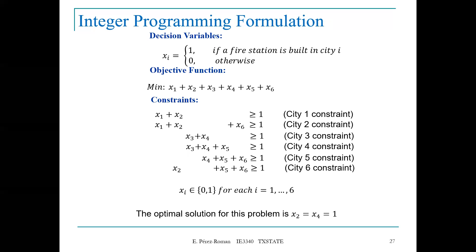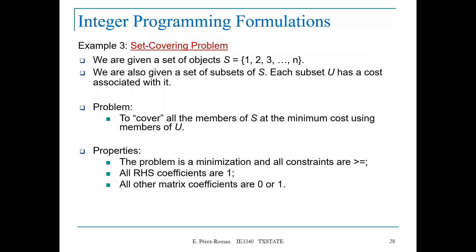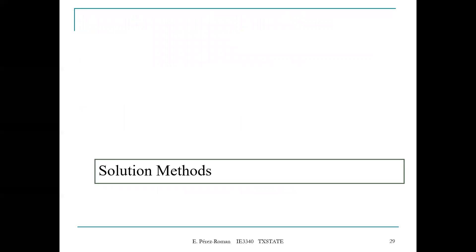This type of problem is called the set covering problem, where we are given a set of objects one through n, a set of subsets each with an associated cost, and the goal is to cover all members at minimum cost. Properties: the problem is a minimization, all constraints are ≥ 1, and all matrix coefficients are zeros or ones. In the next video, we will discuss solution methods for solving integer programs with more than two decision variables.